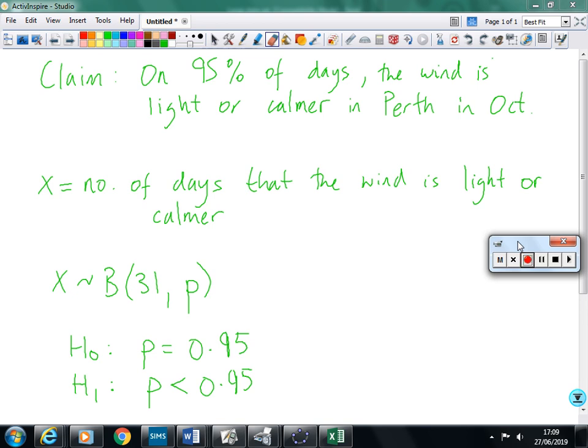So we go to the travel agents, and the travel agent reassures us and says, no, 95% of the days in October, the wind is light or calmer, as measured by the Beaufort scale. Travel agents have to be trained to have this sort of knowledge at their fingertips.